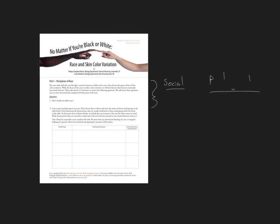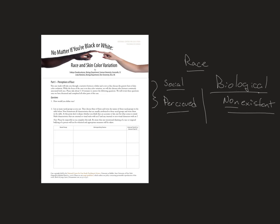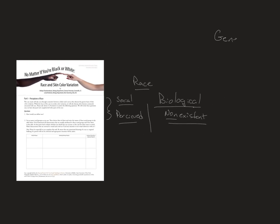That being said, populations are important. There are some correlations between this word 'race' and sexual selection, and therefore they create what we call a gene pool. Gene pools are individuals in a population.